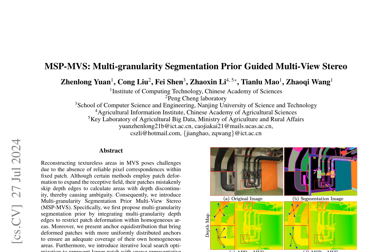MSP-MVS introduces anchor equidistribution, ensuring deformed patches have more uniformly distributed anchors to adequately cover their own homogeneous areas. Additionally, it employs iterative local search optimization to represent larger patches with sparse representative candidates, significantly boosting the expressive capacity for each patch.